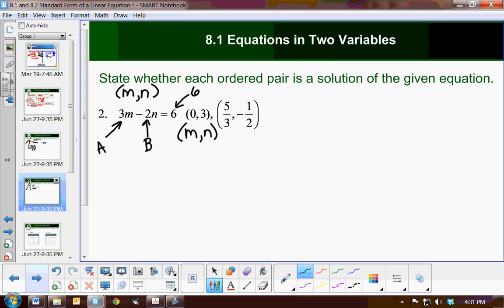So let's test it. So 3 times the value of m is 0, minus 2 times the value of n is 3, equal to 6. So 0 minus 6 equals 6. So does negative 6 equal 6? No, it does not. So this is not a solution.